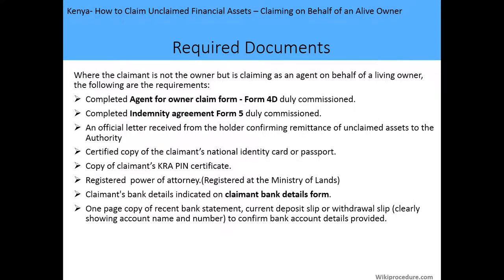The required documents are as follows. Where the claimant is not the owner but is claiming as an agent on behalf of a living owner, the requirements are: a completed agent for owner claim Form 4D, duly commissioned; a completed indemnity agreement form, also duly commissioned; an official letter received from the holder confirming remittance of unclaimed assets to the authority; and a certified copy of the claimant's national identity card or passport.